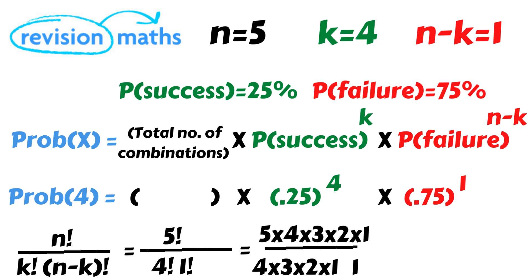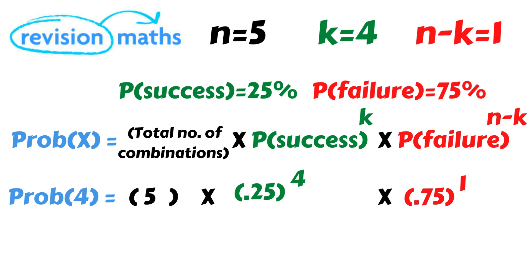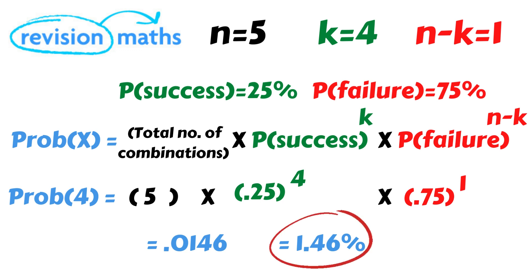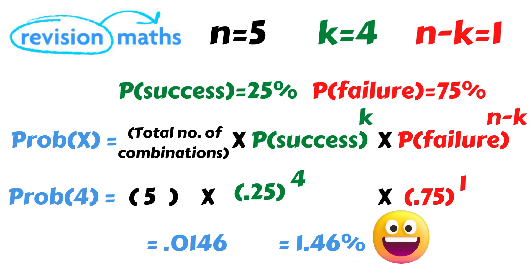So going back to the original question — calculating the probability that the spectator chose the winner of four of the five races with four horses running in each race — the probability equals five multiplied by 0.25 to the power of four (that is, 0.25 × 0.25 × 0.25 × 0.25) multiplied by 0.75. This equals 0.0146, or one point four six percent. So the probability that the spectator got four of the five race winners correct is 1.46% — quite a good day at the races!